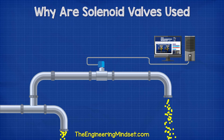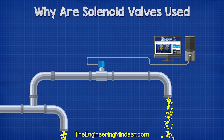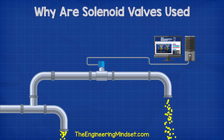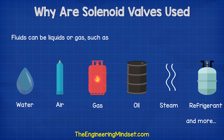All these valves allow engineers to autonomously and remotely control the flow of fluid within a system. This fluid can be a liquid or a gas — for example, water, air, natural gas, oil, steam, refrigerant, et cetera. The list goes on and on.